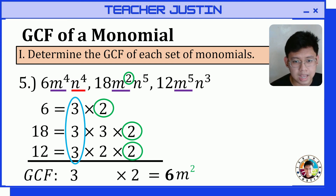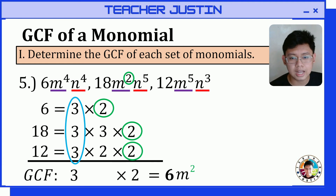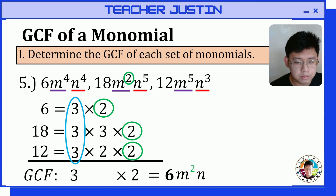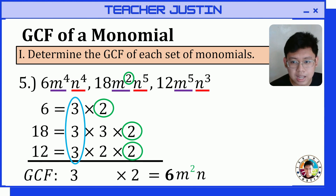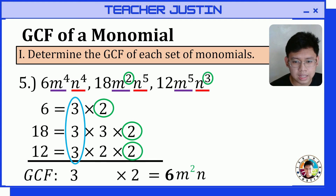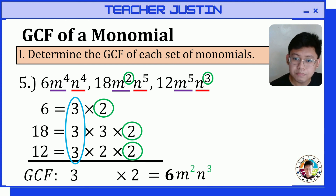Next, let's check for variable n. The first monomial has n, the second monomial has n, and the third monomial also has n. Since all monomials have n, we copy it and pick the smallest exponent. The smallest exponent of n in the set is 3. So n cubed is the GCF contribution from variable n. To finalize, the GCF of this set of monomials is 6m squared n cubed.